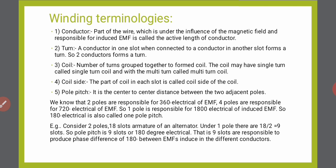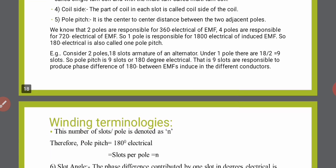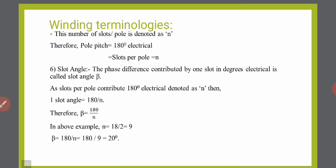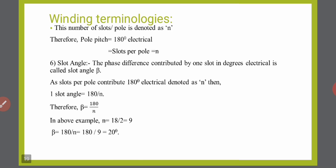Consider an example: a two-pole alternator having 18 slots. Under one pole there are 18 divided by 2 slots. So the pole pitch is 9 slots, or 180 degrees electrical — meaning 9 slots are responsible for producing a phase difference of 180 degrees electrical. The number of slots per pole is denoted by N, so pole pitch equals 180 degrees electrical, which is the number of slots per pole denoted by N.